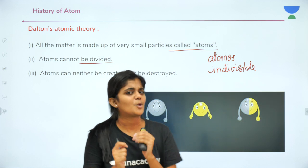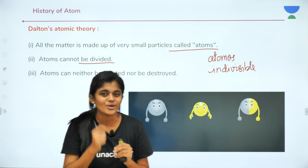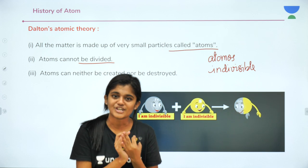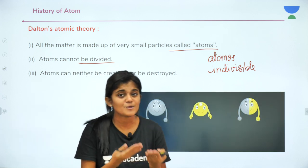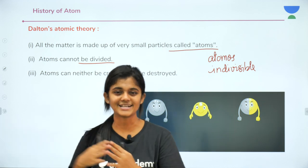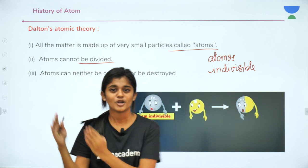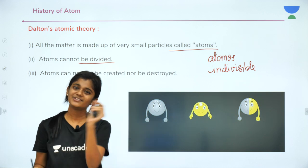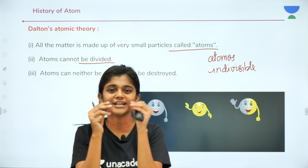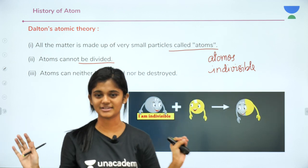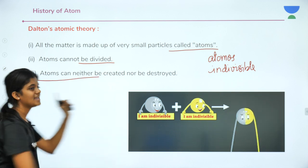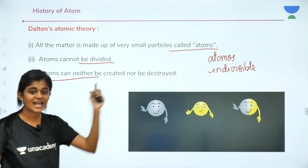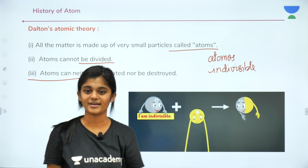Nowadays research has shown that atoms are indeed made up of protons, neutrons, and electrons, and even those are made of more elementary particles. But according to the first theory, atoms were considered indivisible — nothing existed inside them. The third postulate, taken from the Law of Conservation of Mass, states: atoms can neither be created nor destroyed.